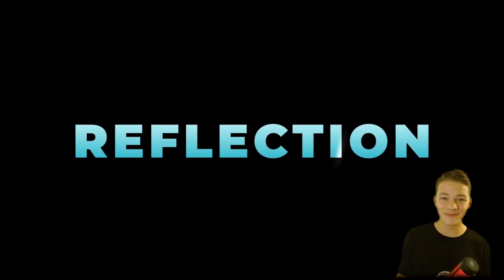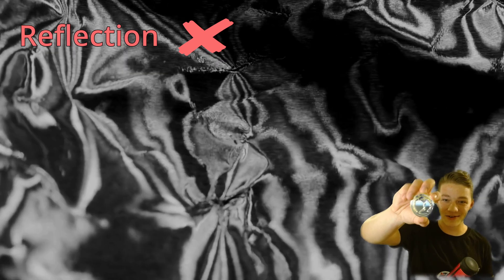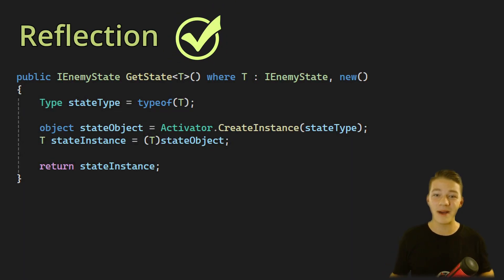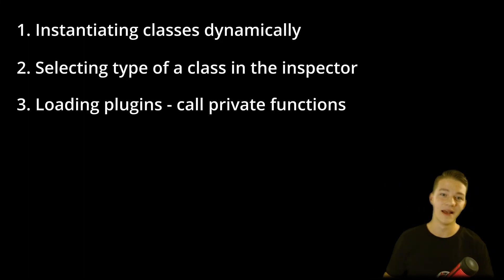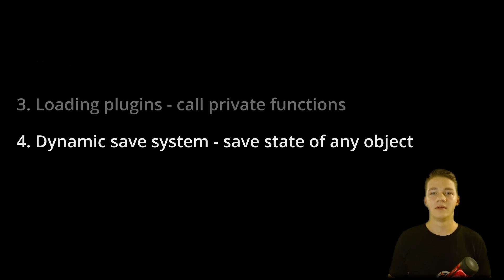Reflection is another fancy programming term. It doesn't have anything to do with reflections on metallic surfaces, rather it allows your code to be much more dynamic. In this tutorial I will walk you through 4 various examples where you can use reflection to save yourself a lot of time. I already told you that using reflection you can write more dynamic code, so what does this mean?